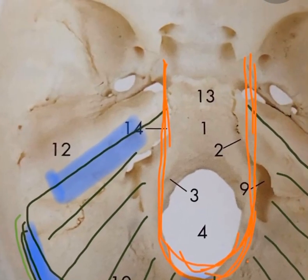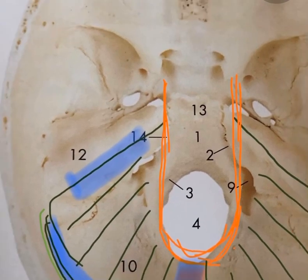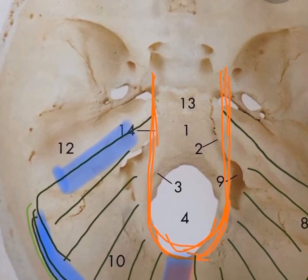To summarize, the marks distribution for Tentorium Cerebelli covers: number one, it is a dural fold; number two, the attached margin; number three, the free margin; number four, the tentorial notch and tentorial herniation; and number five, the sinuses related to the Tentorium Cerebelli. These are the five salient points you are supposed to write for the Tentorium Cerebelli.